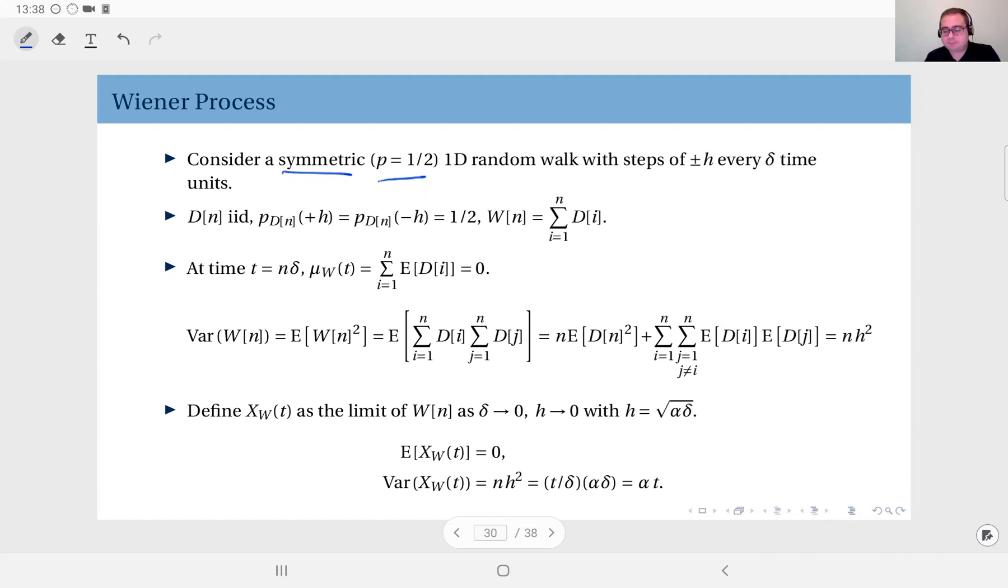We will also modify the time index and the amount of the step. We'll make it plus or minus h. H is going to be an infinitesimal increase every delta time. Delta is the width of our time slot - not one, two, three, but delta, two delta, three delta. The step process is the same, it's IID, but it's plus or minus h with probabilities one-half. When you observe this process at time t equals n times delta, the expected value is zero.